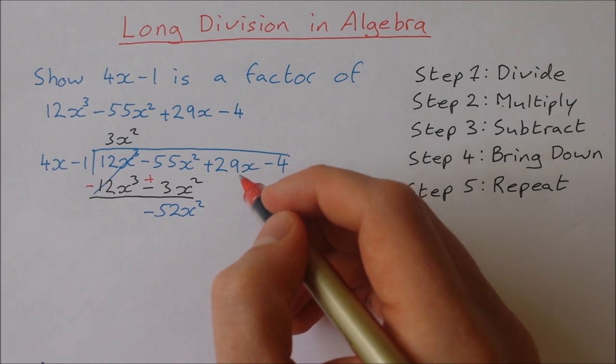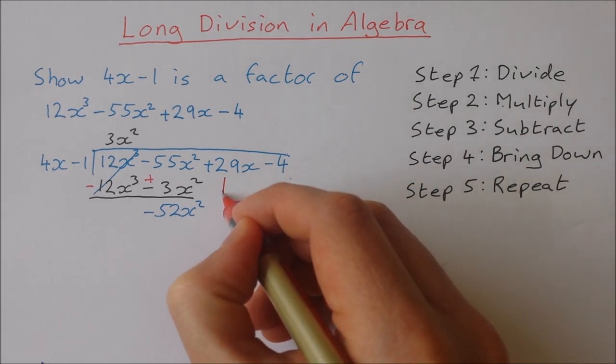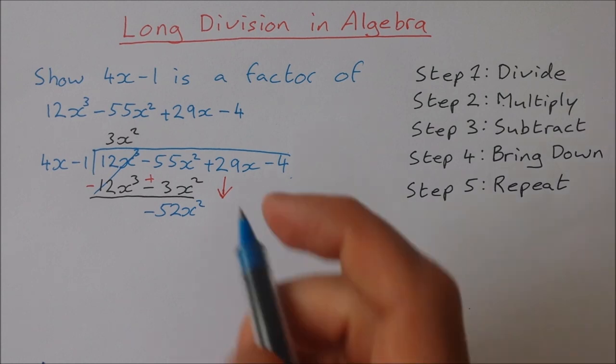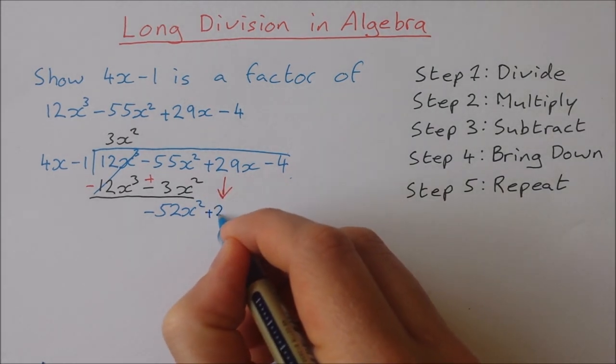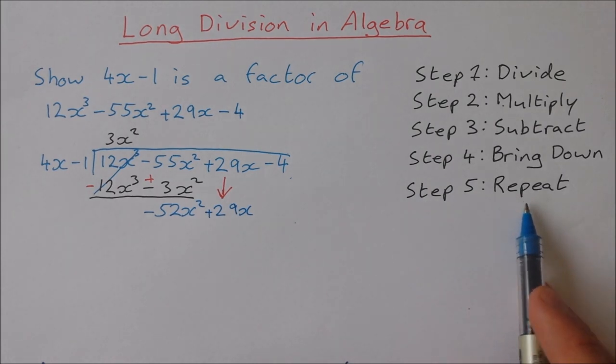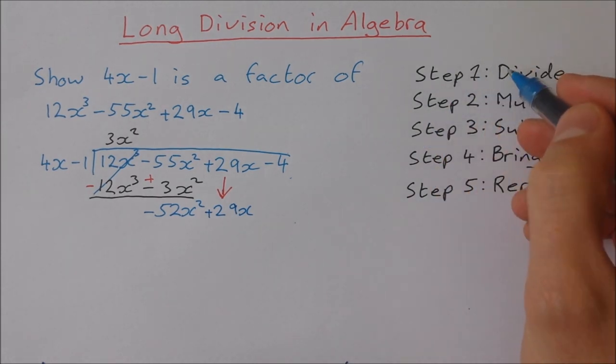Step 4 bring down. I'm going to bring down the next term which is 29x. So plus 29x. Step 5 repeat. So that brings me back up here to divide.